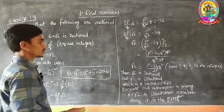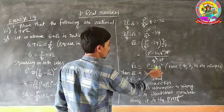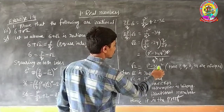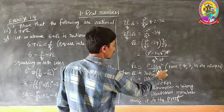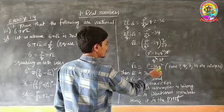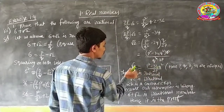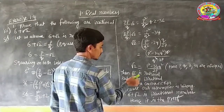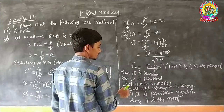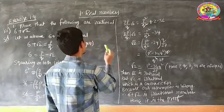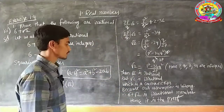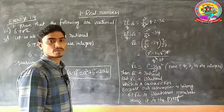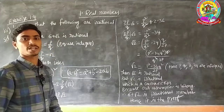On simplifying, you get root 2 equals (P squared minus 34Q squared) by 2P. Since P, Q, 34, and 2 are all integers, root 2 would be rational. But root 2 is irrational — both statements are different, which is a contradiction because of our wrong assumption. Hence 6 plus root 2 is an irrational number.